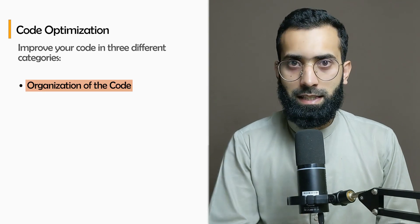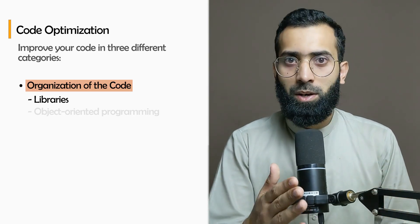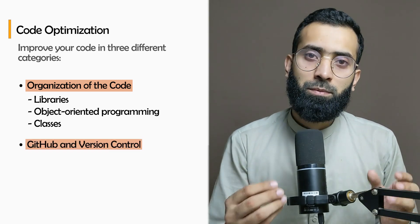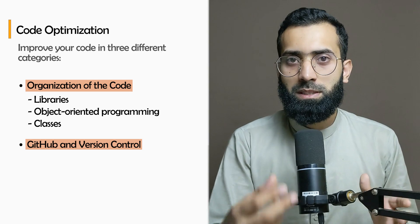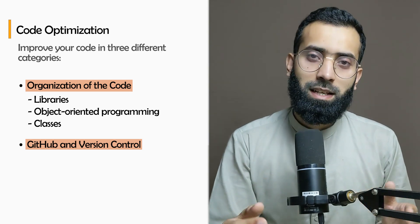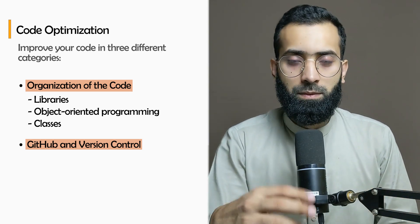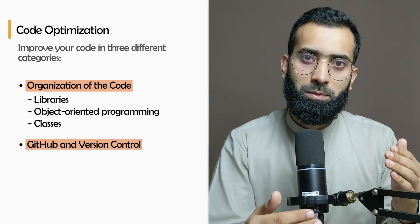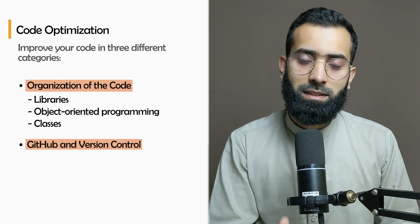First, organization of the code - libraries, object-oriented programming, and classes and these kind of stuff. The next is GitHub and version control of it. This should be done from the start, but let's say that now you understand, so you create version controls, versions of your code so you want to shift into a back version - perfect. Update, save it to the cloud.